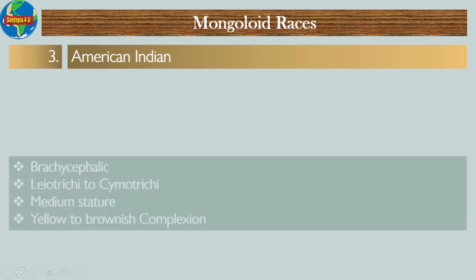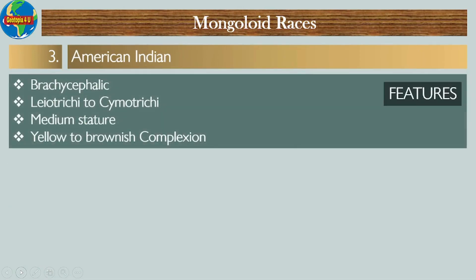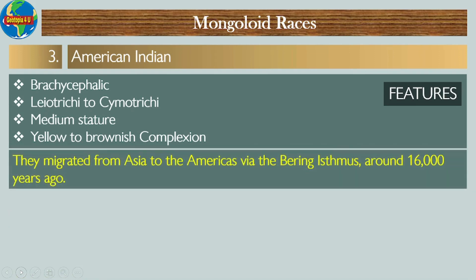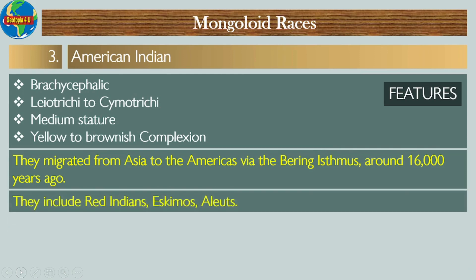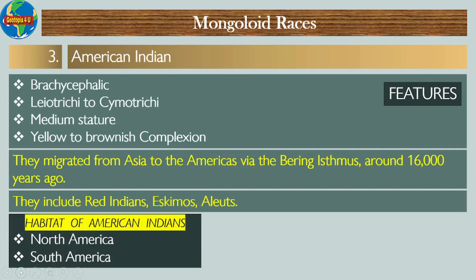Number three: American Indians. The American Indian race migrated across the Bering land bridge around 16,000 years ago. They include the Red Indians, Eskimos, and Aleuts of the Aleutian Islands. The habitat of American Indians includes North America and the South American continent.